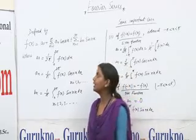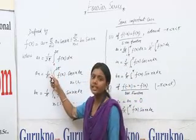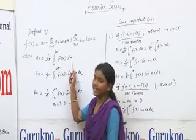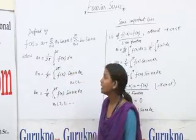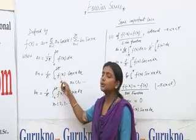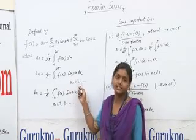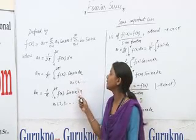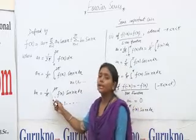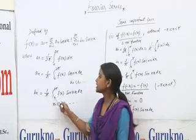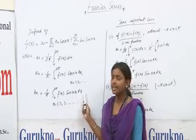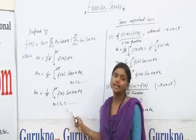The value of a0 is 1 upon 2π integration 0 to 2π f(x) dx, and the value of an equals 1 upon π integration 0 to 2π f(x) into cos nx dx, where n equals 1, 2, and so on. And the value of bn equals 1 upon π integration 0 to 2π f(x) into sin nx dx, and n equals 1, 2, 3, and so on.